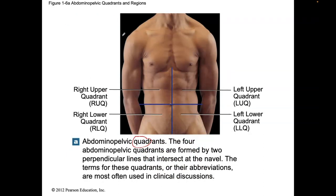When we're looking at the person, this is your reading left and this is your reading right. But you have to remember anatomical position is everything in relationship to the individual. So this is their right shoulder and this is their left shoulder. In terms of quadrants: this is the right upper quadrant, this is the right lower quadrant, this is the left upper quadrant, and this is the left lower quadrant.